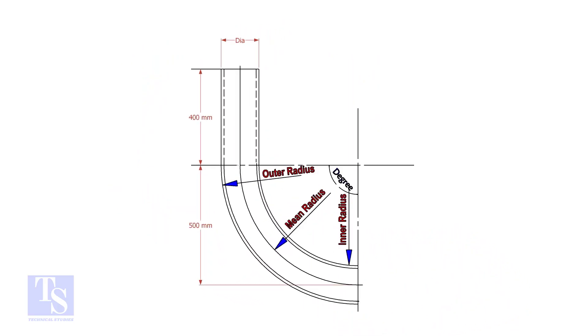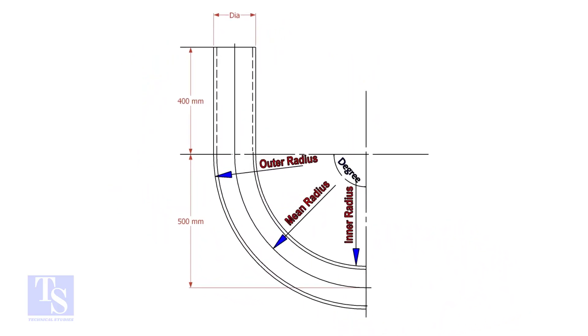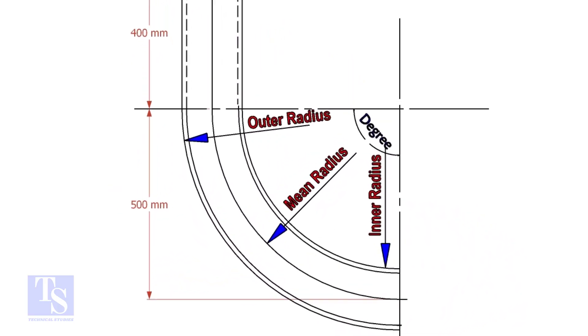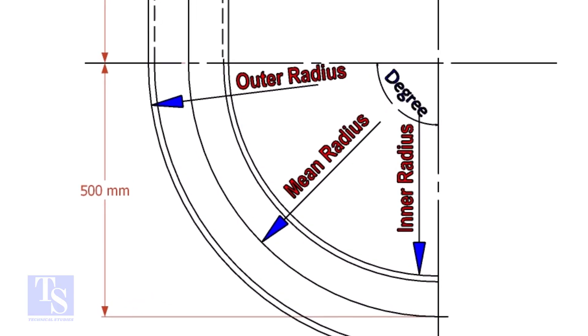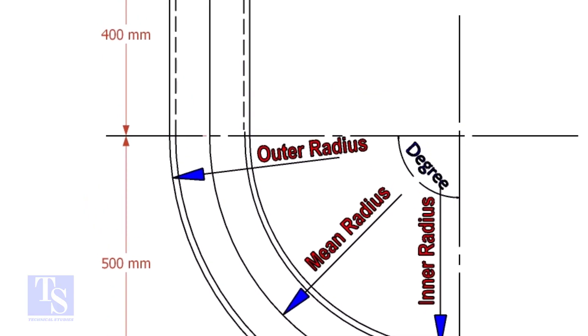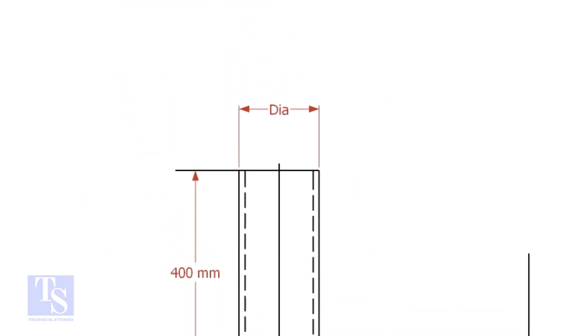To calculate the required length of a pipe to make a bend, we need to know the bend radius, the included degree, and the diameter of the pipe.